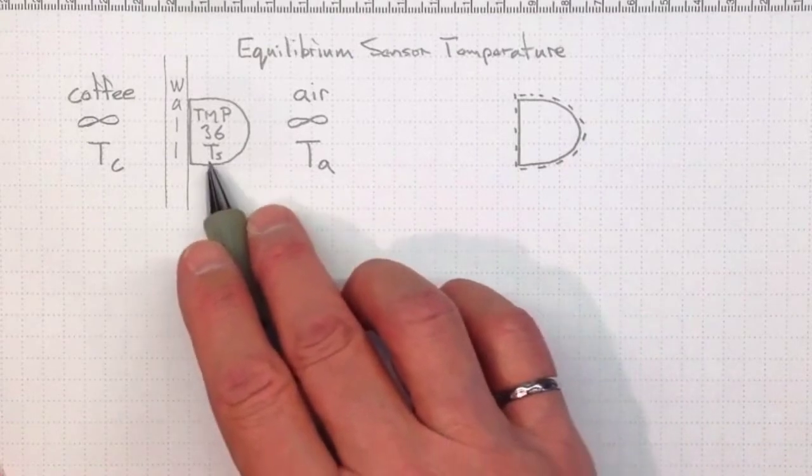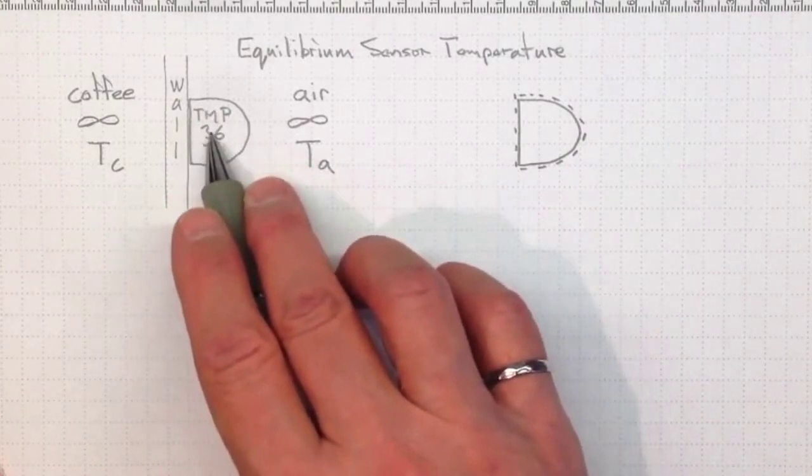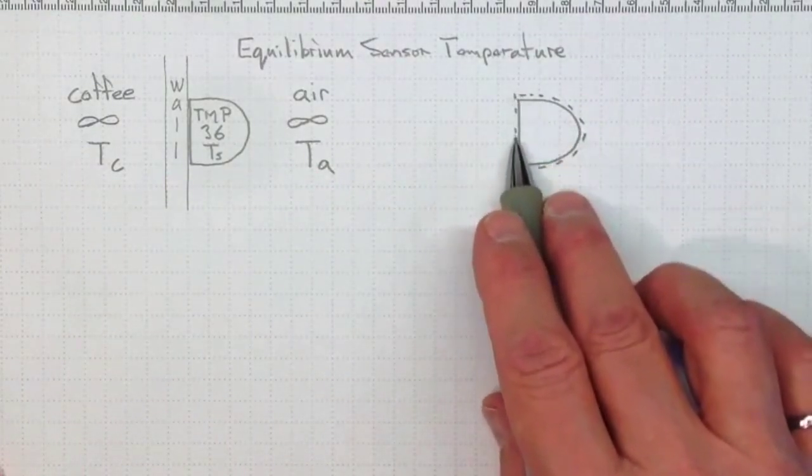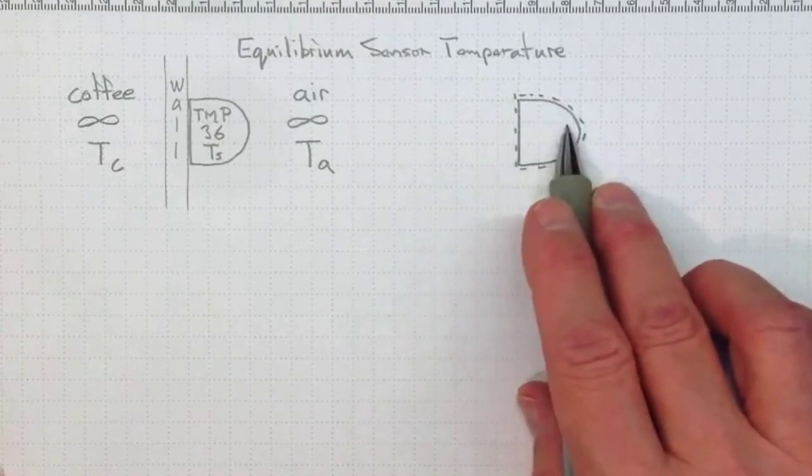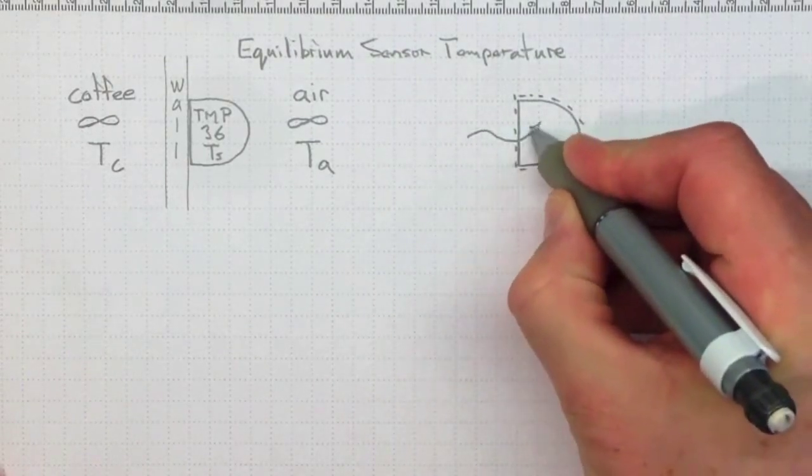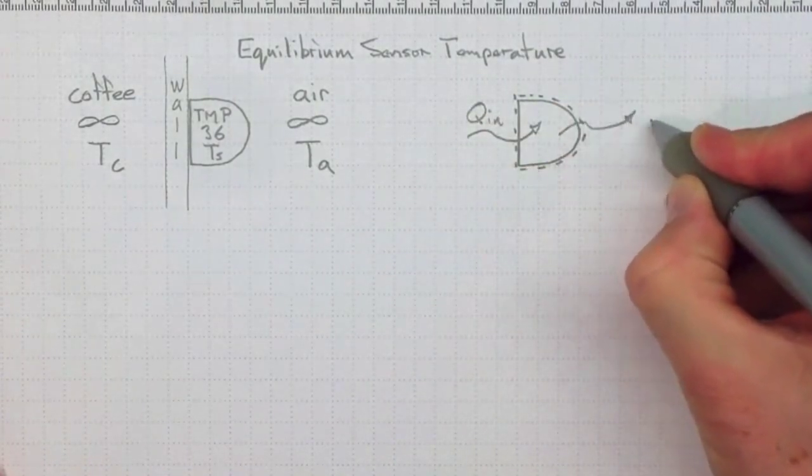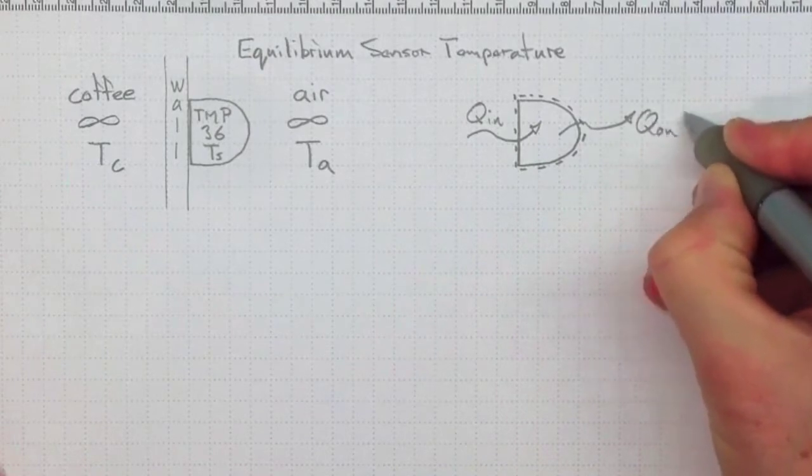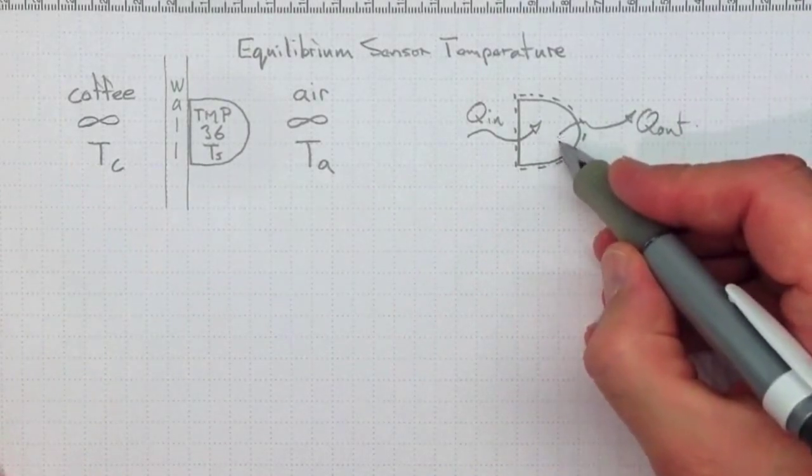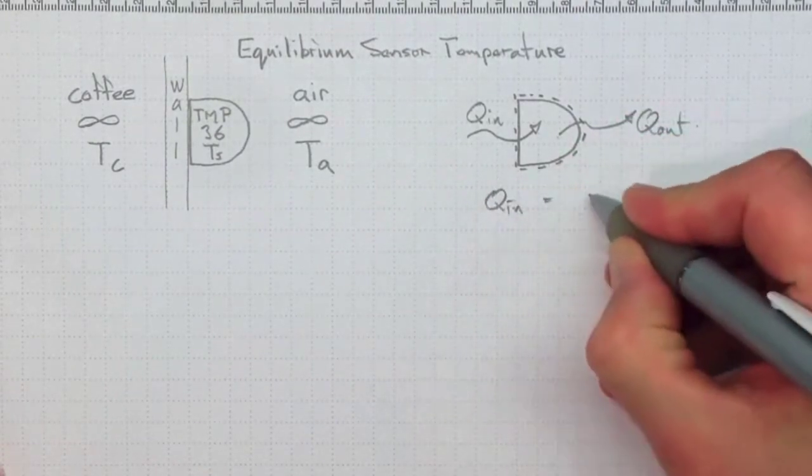So what we need to do in order to find out what the equilibrium temperature for this component is going to be is do an energy balance on a control mass. This control mass is in equilibrium. That means if we've got heat flowing in from this side and heat flowing out to the air side, they need to balance, otherwise the temperature would be changing. So it's a simple matter of Q_in equal to Q_out.